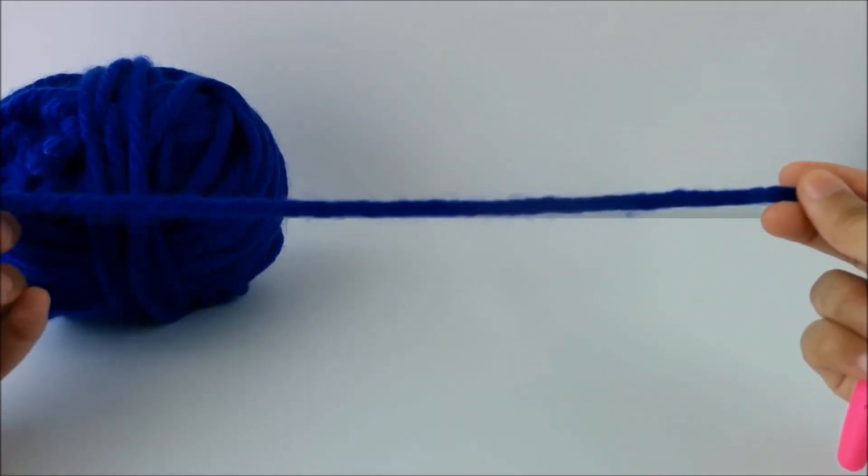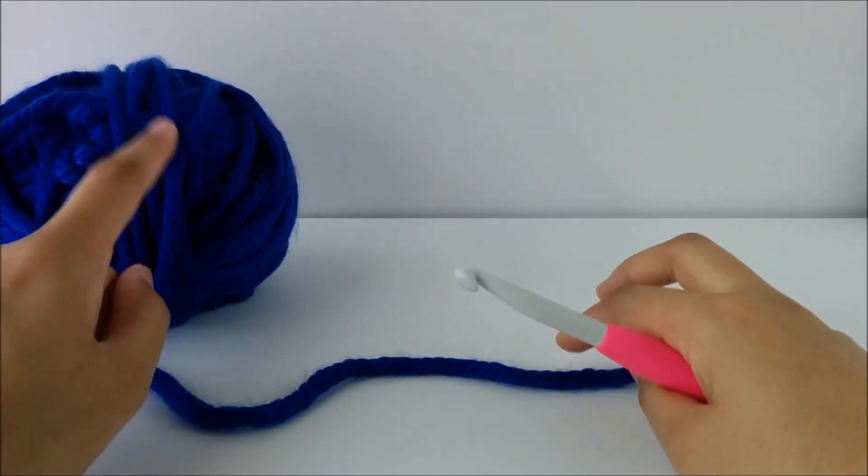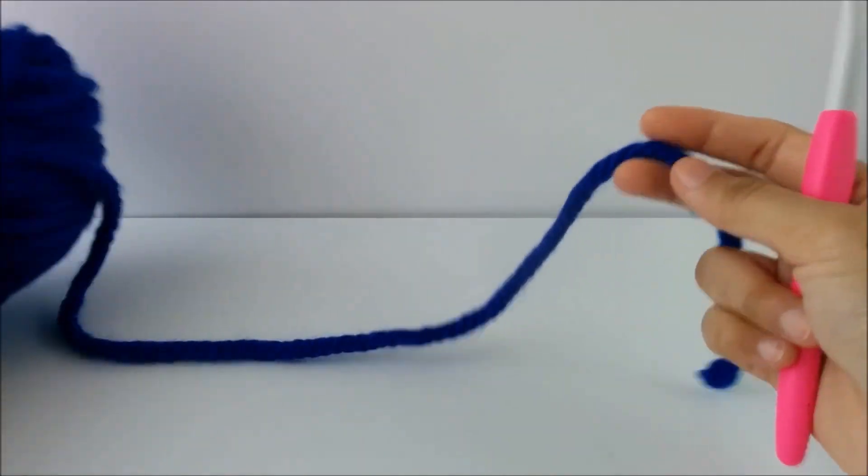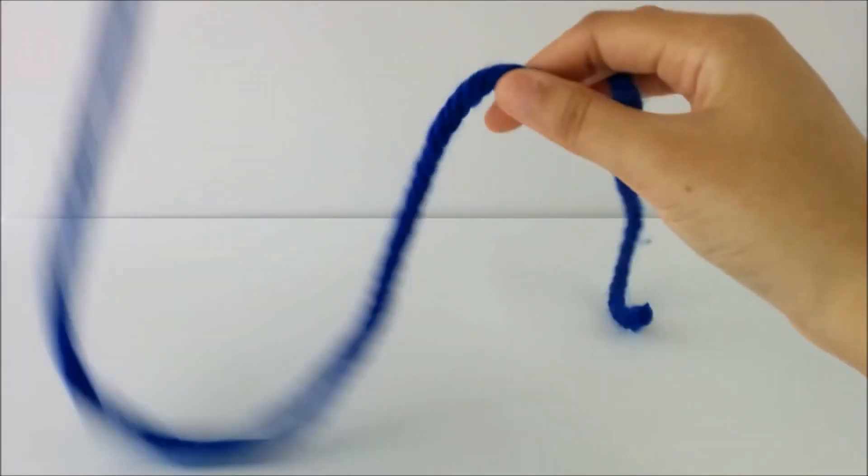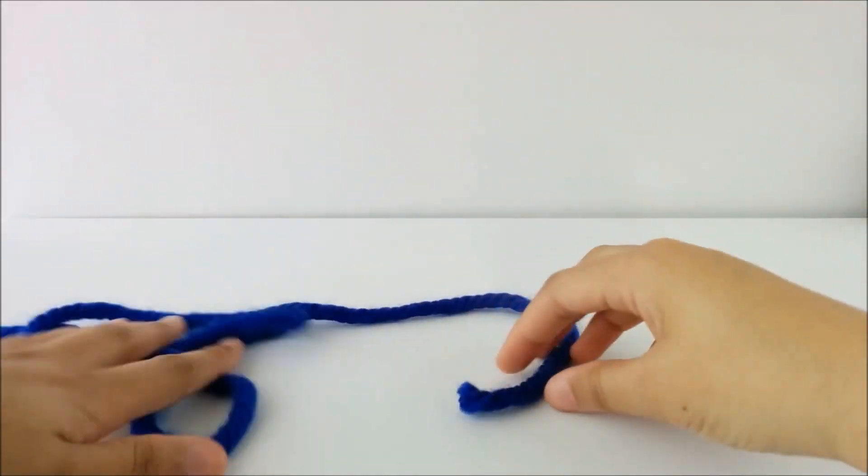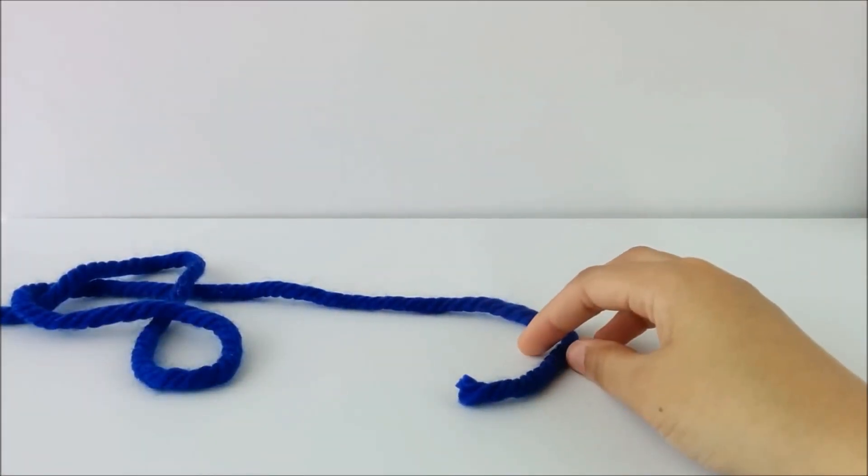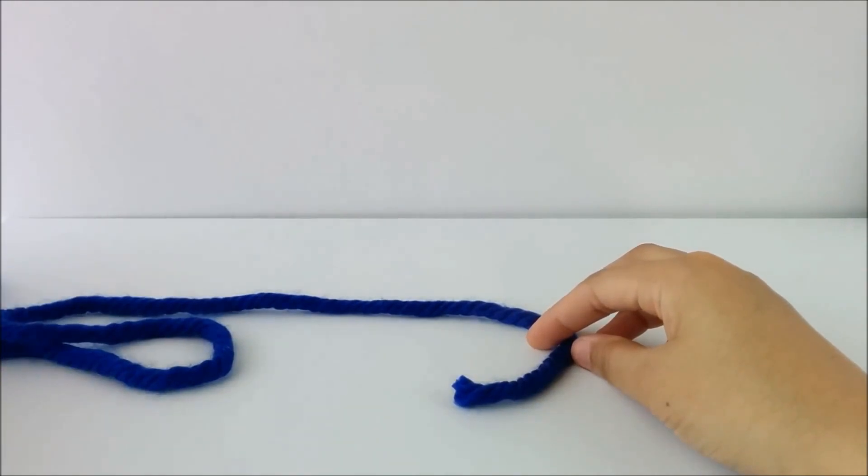So let's get started. This is actually Knit Picks the Mighty Stitch, I think. So the first thing you want to do is get your yarn and get a little bit of length so that it's nice and loose coming from the ball.